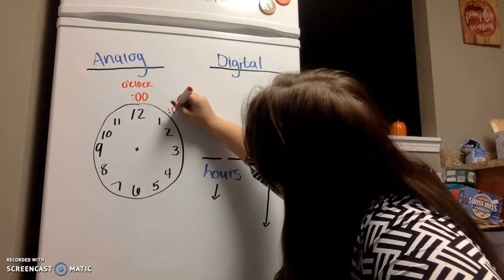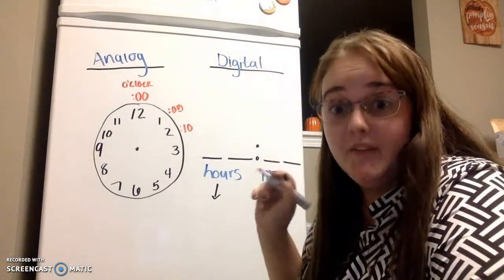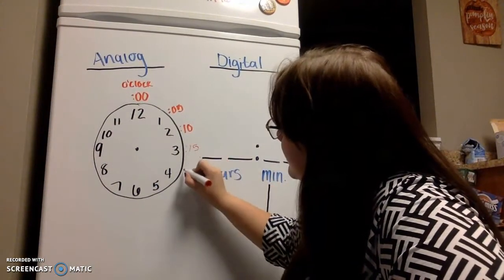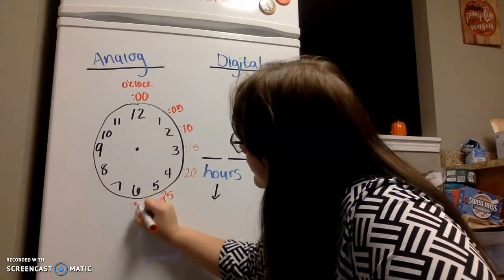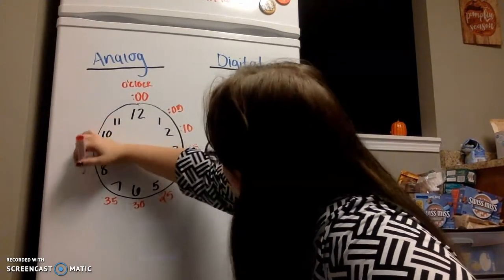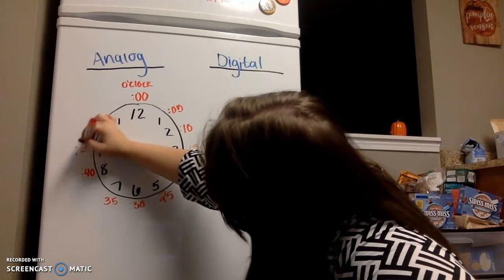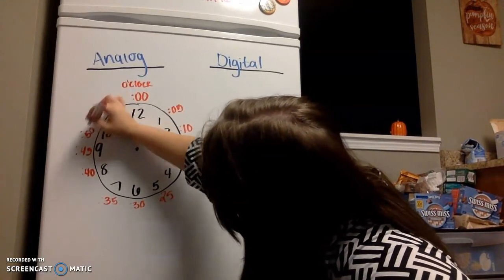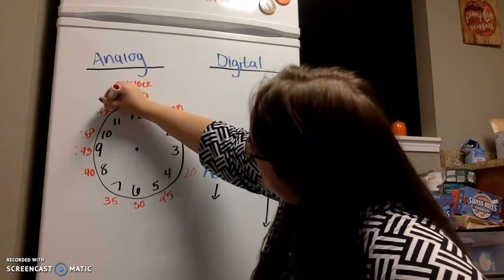So starting at 1, we have 5 and then 10. You guys know how to count by 5s, so count along with me. 15, 20, 25, 30, 35. Let's see if I can write it down. 40, 45, 50, 55.